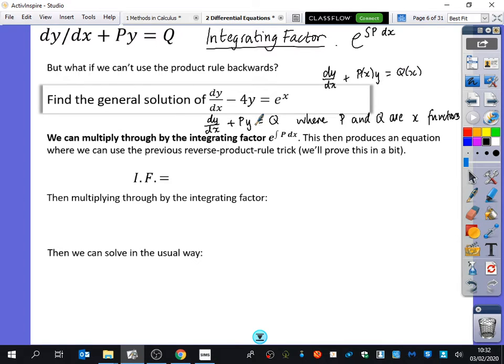So the features that you should notice about this is that dy/dx is alone. There's nothing in front of the dy/dx, okay? It has to look like this. And then you get the p(x) goes in front of a single y. That's the other thing. And there must just be a q(x) on that side.